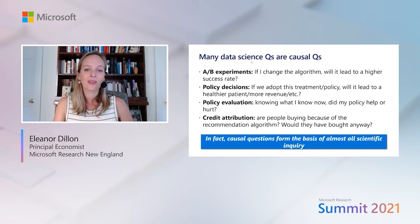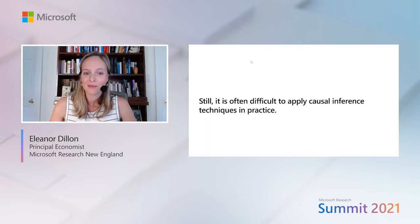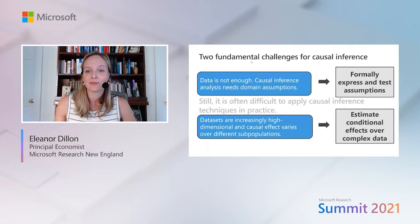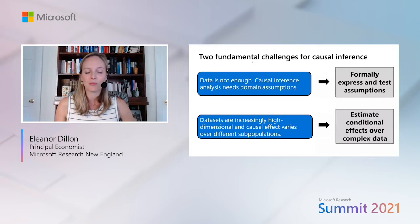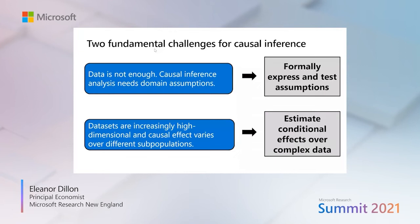We know that it's important to think causally rather than just predictively, but it's often difficult to figure out how to do that in practice. There are two fundamental challenges in causal inference. One is that even more than prediction problems, the validity of causal analysis always depends on assumptions — data is not enough, we really need to be clear about what we believe relationships will be. Because of this, causal inference has traditionally been the domain of specialists like economists who are practiced in developing and articulating these assumptions.